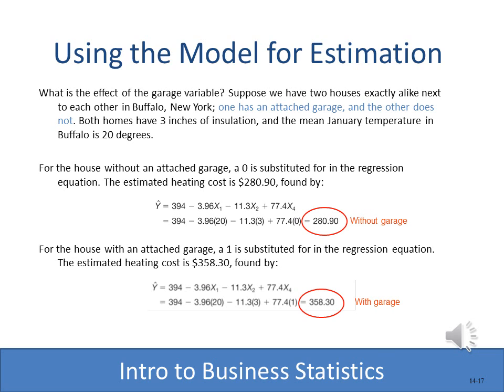Based on the multiple regression results, our new equation is: predicted heating cost per month equals 394 minus 3.96 times x1 (outside temperature) minus 1.3 times x2 (inches of insulation) plus 77.4 times x3 (the garage dummy variable). By plugging in values for x1, x2, and x3, we can predict the monthly cost to heat the house.